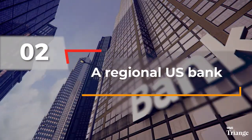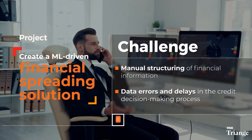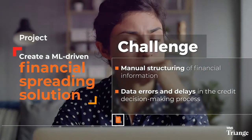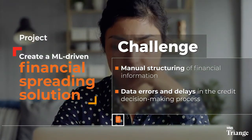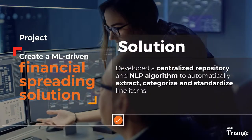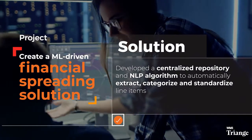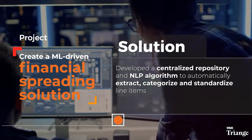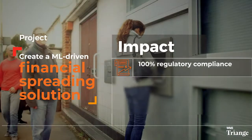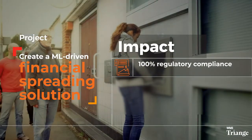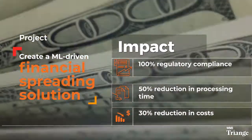A regional US bank was dependent on manual efforts for spreading and analysis. This increased their chances for errors and longer turnarounds, as the source documents were stored in disparate systems. To help, WNS developed a centralized repository and NLP algorithm to automatically extract, categorize, and standardize these items for the bank. This enabled 100 percent regulatory compliance, reduced processing time by 50 percent, and lowered costs by 30 percent.